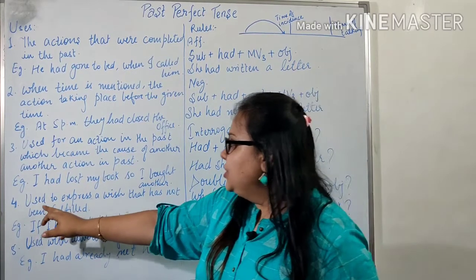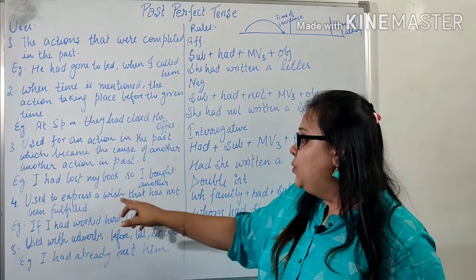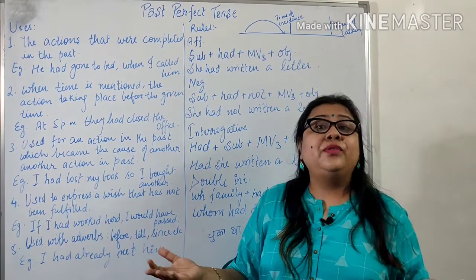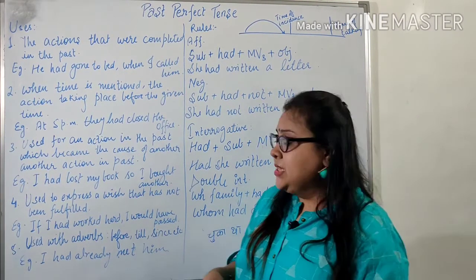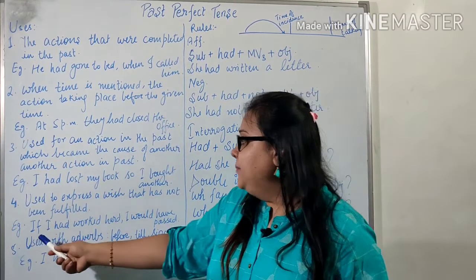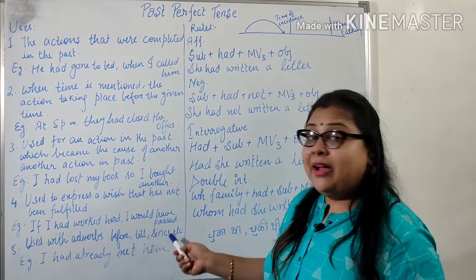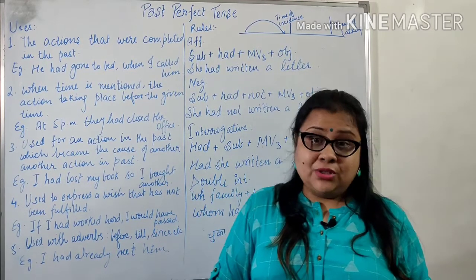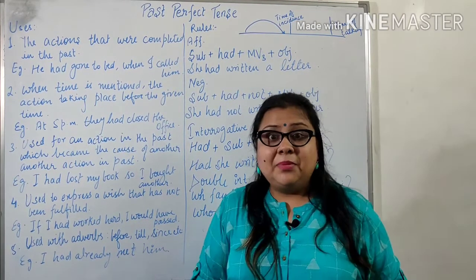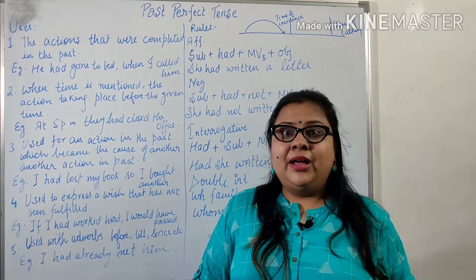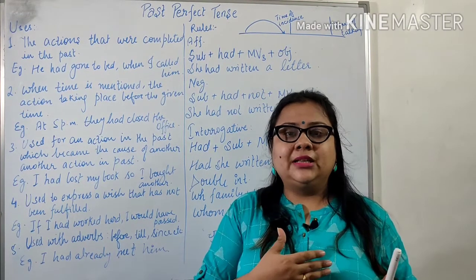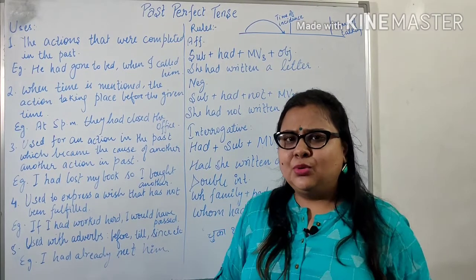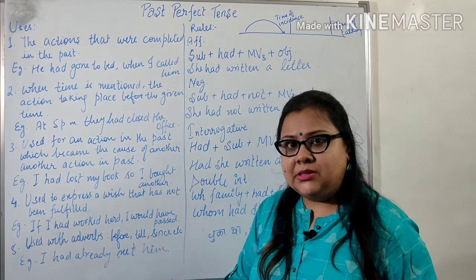Talking about the fourth application: past perfect is used to express a wish that has not been fulfilled — aisi koi wish jo fulfill hi nahi ho payi. For example: 'If I had worked hard, I would have passed' — agar maine mehnat ki hoti, toh main pass ho jaata. Another example: 'If I had started early, I would have caught the train' — agar maine jaldi shuruwaat kar di hoti, toh main train pakar leta.